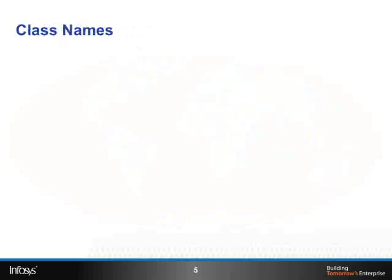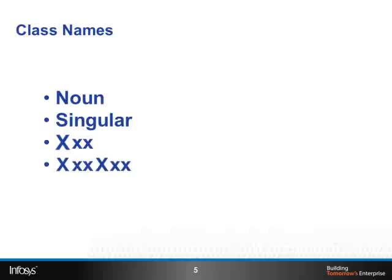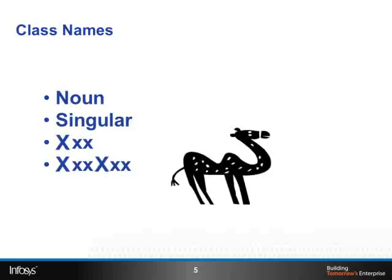The name of a class should be a noun. Most often, it is singular. The first letter should be uppercase, and the rest lower. If there is more than one word, each word should start with an uppercase letter. The style in which each word starts with an uppercase is called camel casing.